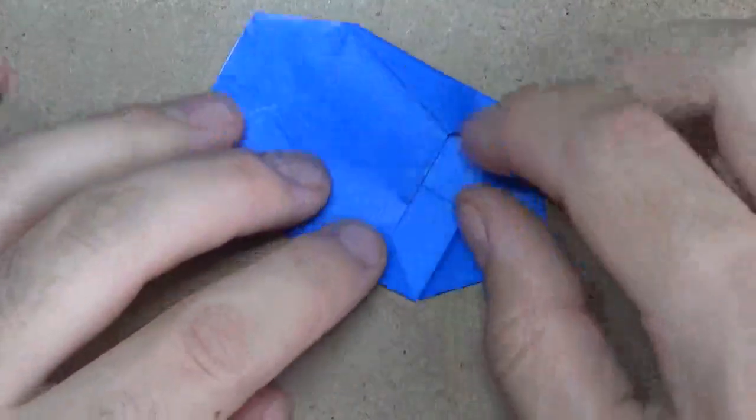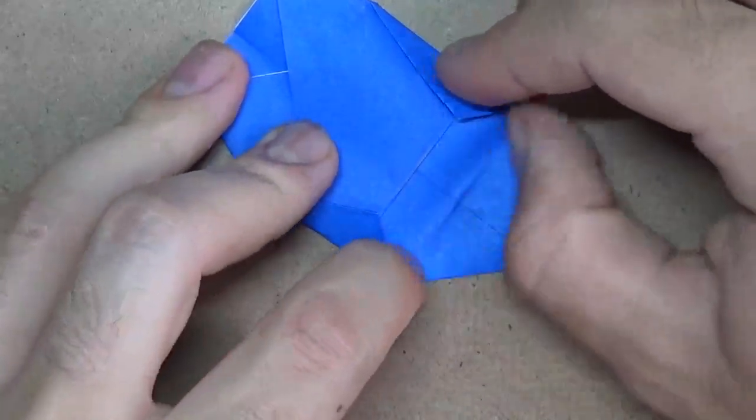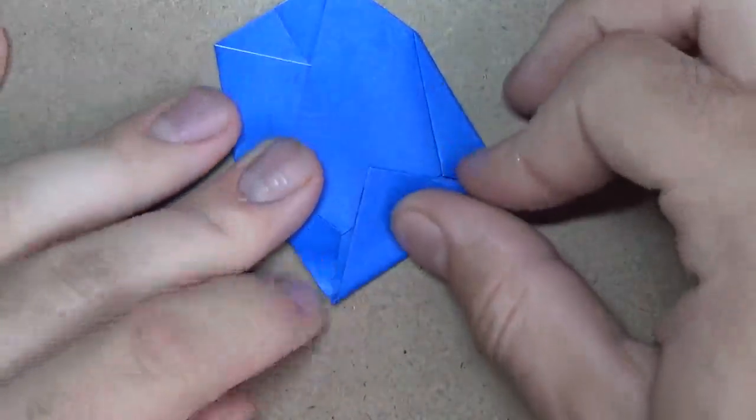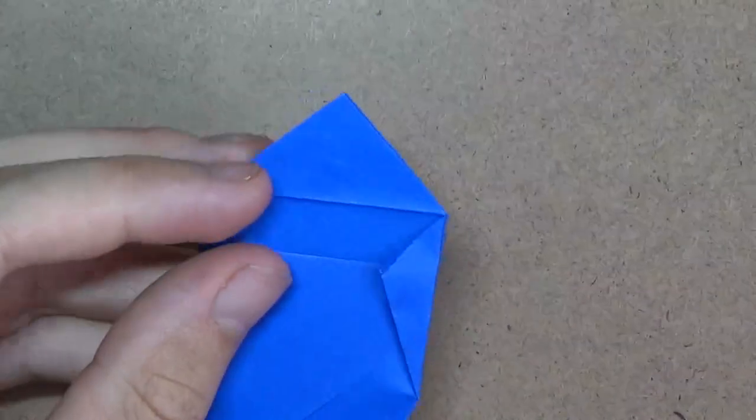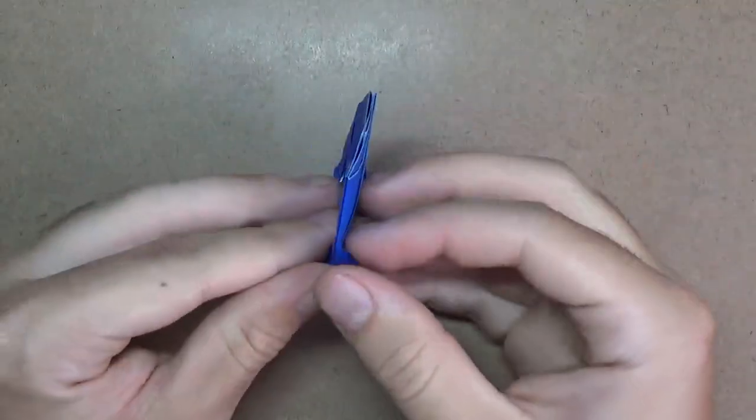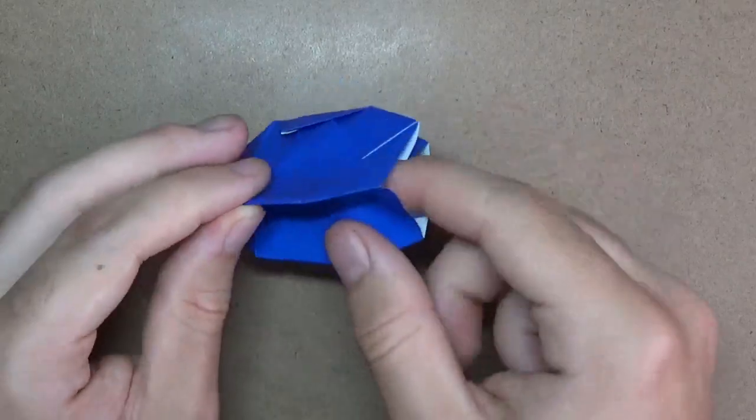Unfold. Turn over. Let's loosen the crease up and reverse it. All right. Now comes the fun part. We're going to open the base up. So you just separate two sides like this.